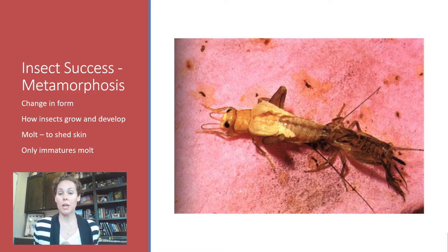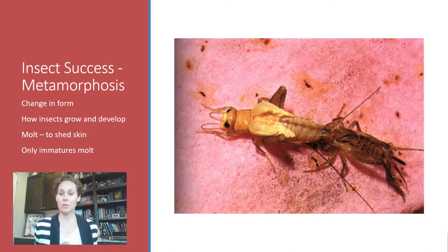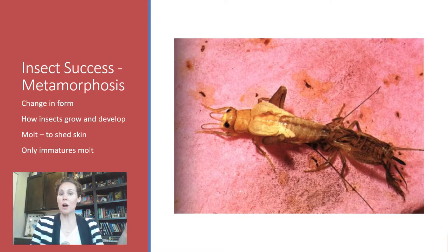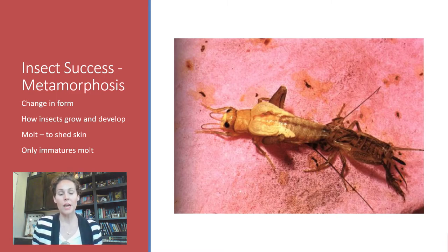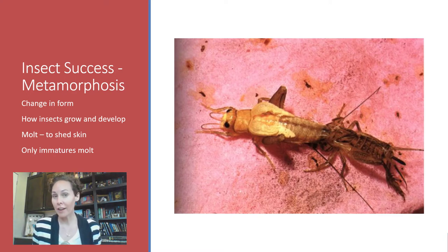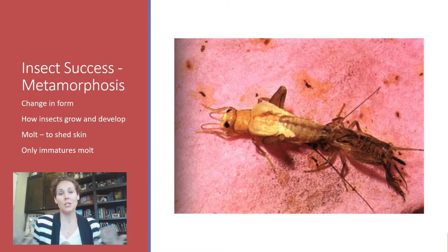The ability to change form and go through metamorphosis involves the process called molting — they shed their exoskeleton, their outer lining, and emerge soft and ready to become the new life stage. It's important to note that only the immature forms can molt. Once you've become an adult with fully developed wings — which is usually what defines adulthood — you will never molt again. So a tiny fly flying around is not a baby fly; it's an adult fly that's as large as it's going to get and will never molt again.